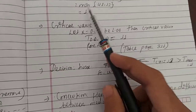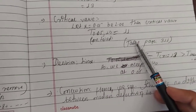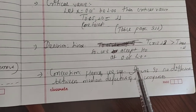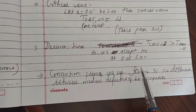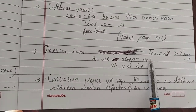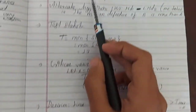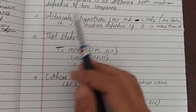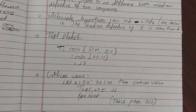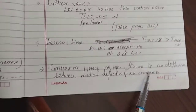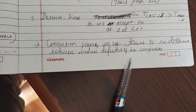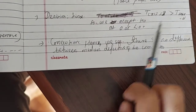Since the calculated value 13 is greater than the critical value 11, we accept the null hypothesis H0. There is no significant difference between the median number of defectives of the two companies.